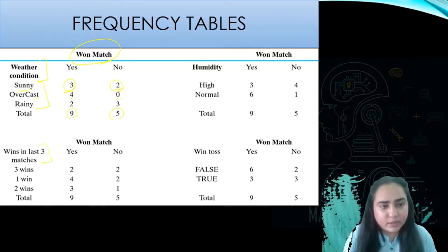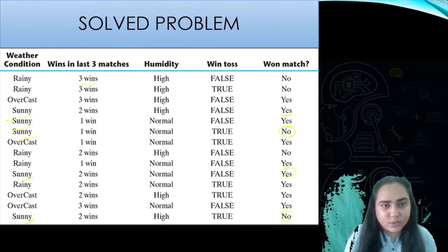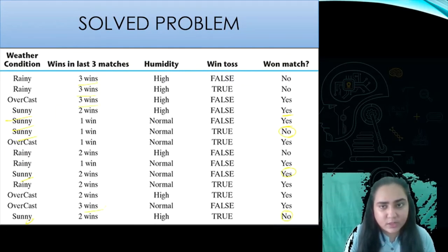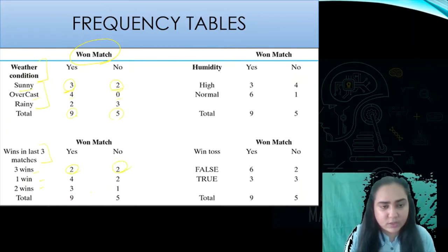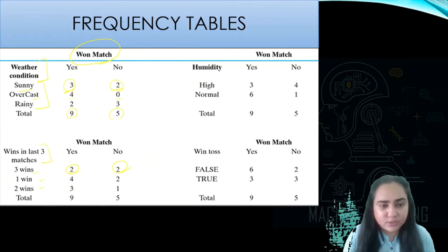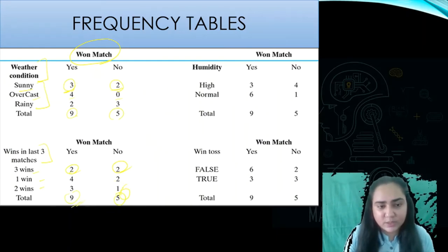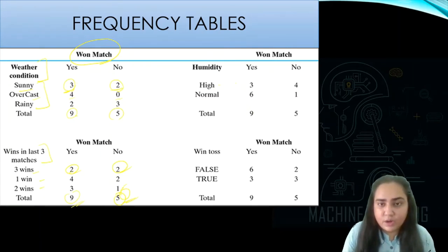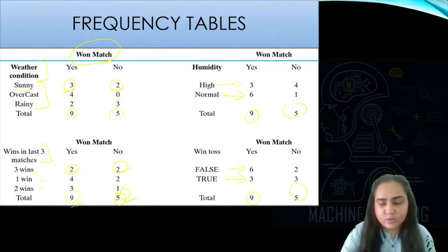Next, we look at wins in the last three matches: three wins, two wins, and one win. We count how many yeses and no's correspond to each. For example, three wins comes up four times — two no's and two yeses. We similarly calculate for one win and two wins, and the total is always nine yeses and five no's. We then repeat the same process for high and normal humidity, then for win toss (false and true), each time taking the same total.